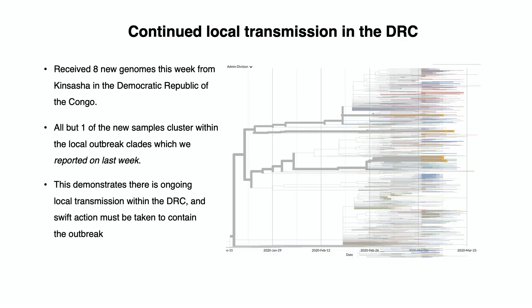From Kinshasa in the Democratic Republic of the Congo, we received eight new genomes this week. All but one of the new samples cluster within the local outbreak clades, which we reported on last week. This demonstrates that there is ongoing local transmission within the DRC and swift action must be taken to contain the outbreak.